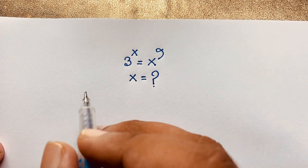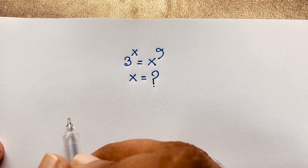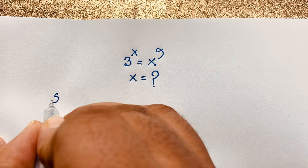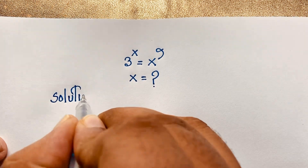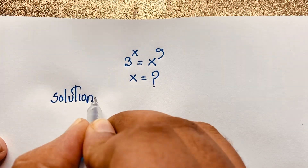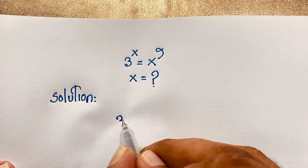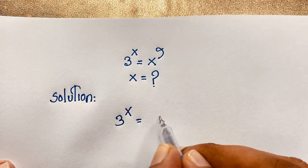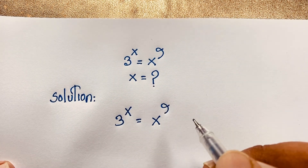I will solve this question using an easy method. Our question is: 3 to the power x is equal to x to the power 9.